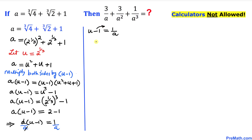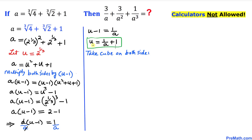Moving the negative one to the right hand side, u turns out to be 1 over a plus 1. Now we are going to cube both sides. So u cubed equals 1 over a plus 1, all to the power 3.